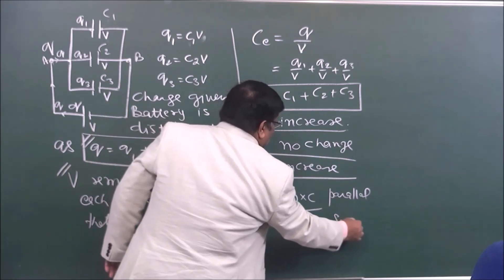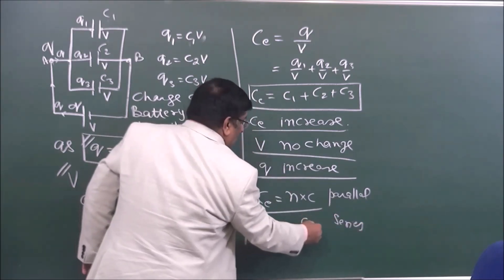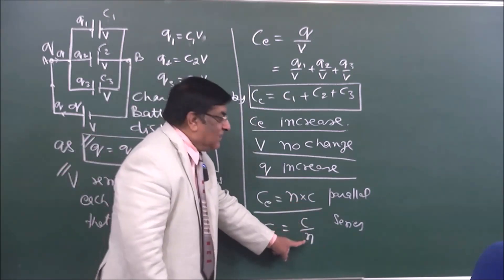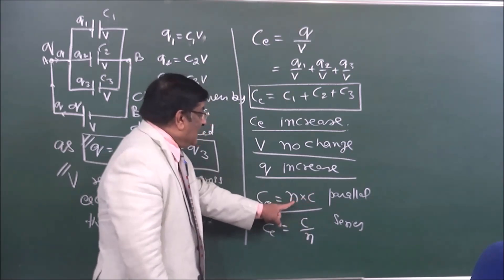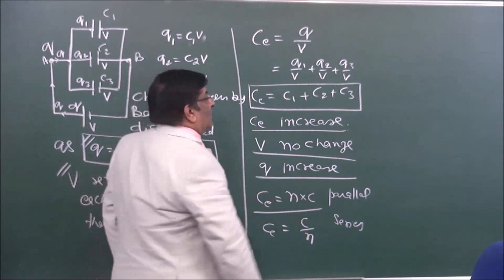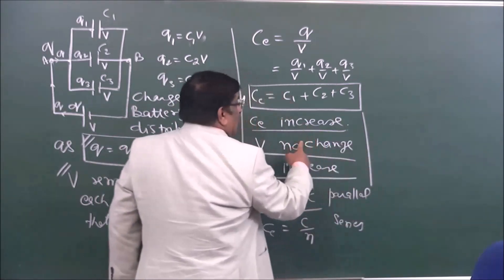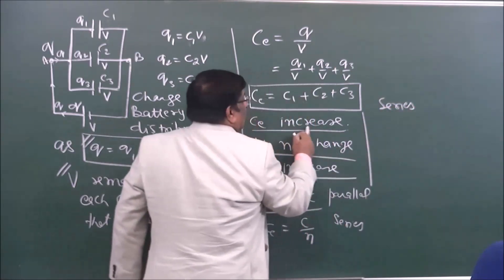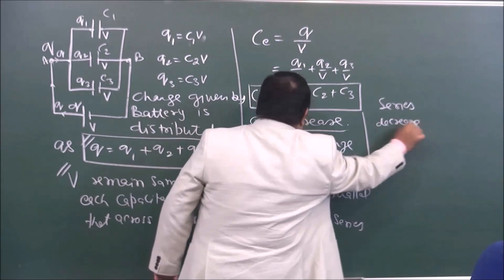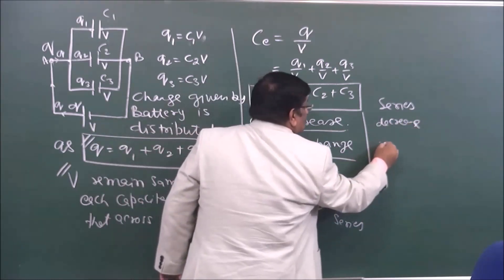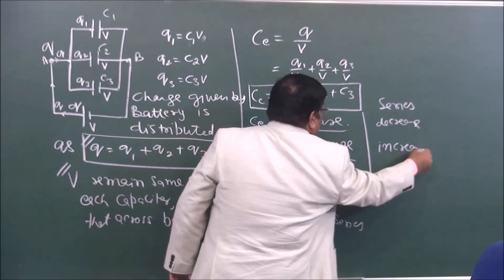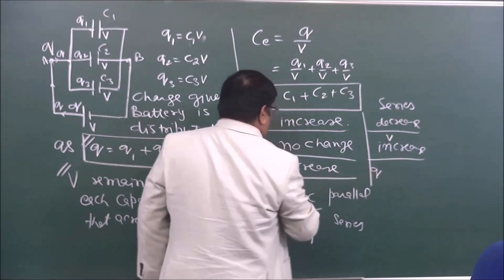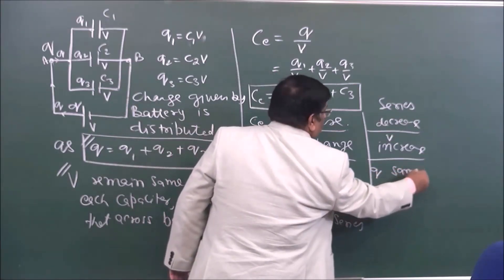In series: Ce decreases, V increases, Q remains same. In parallel: Ce increases, V remains same, Q increases. These are the features of each combination.